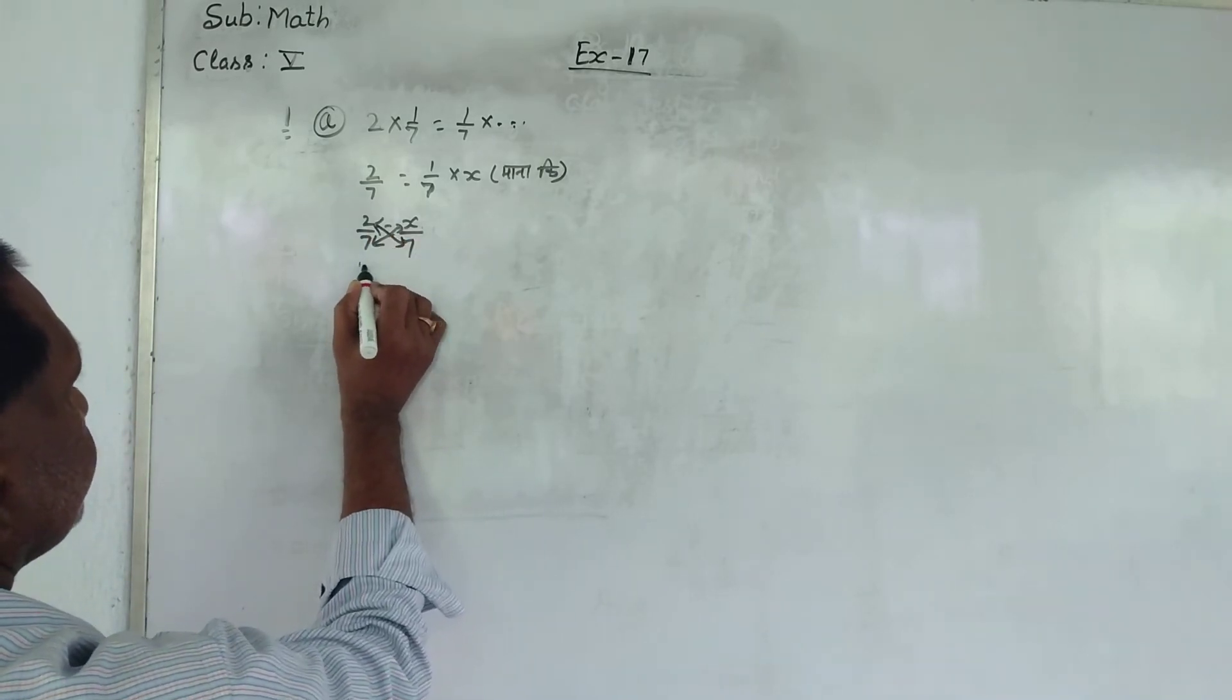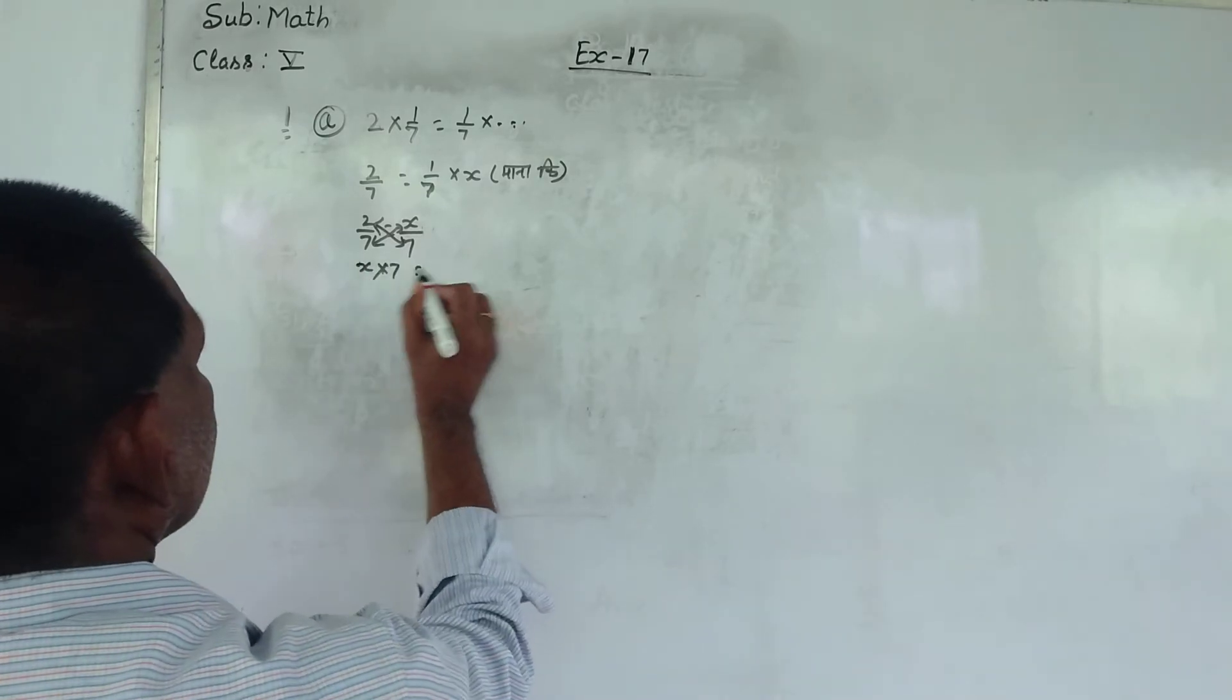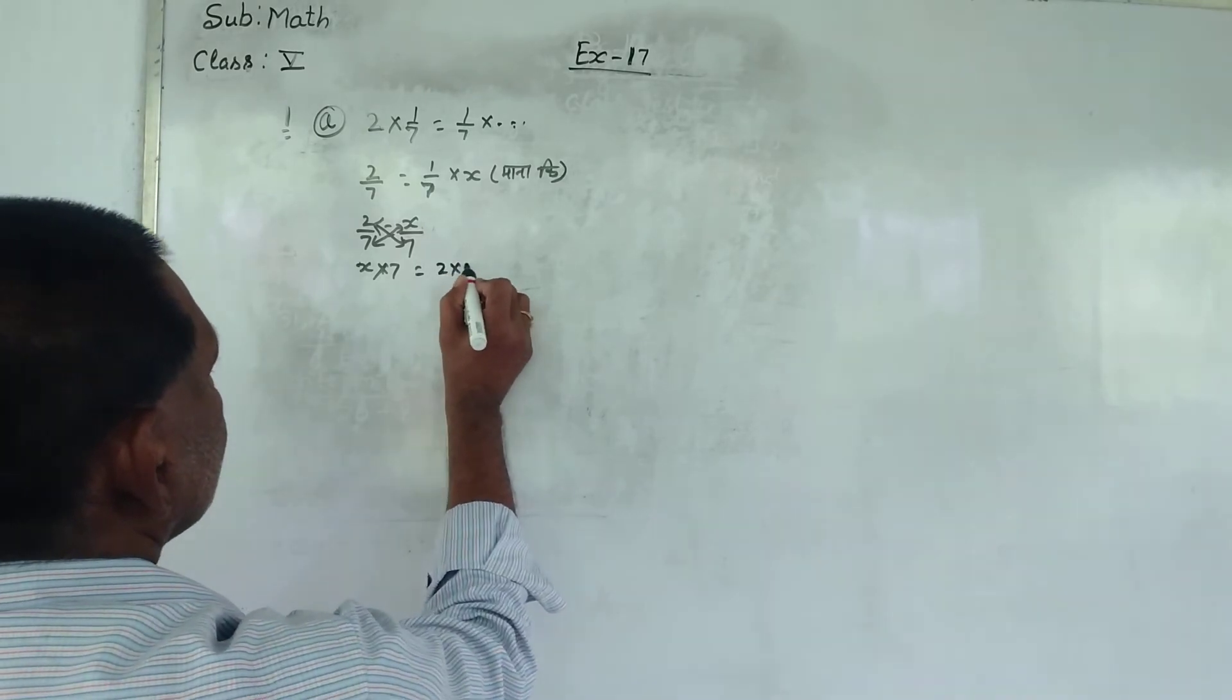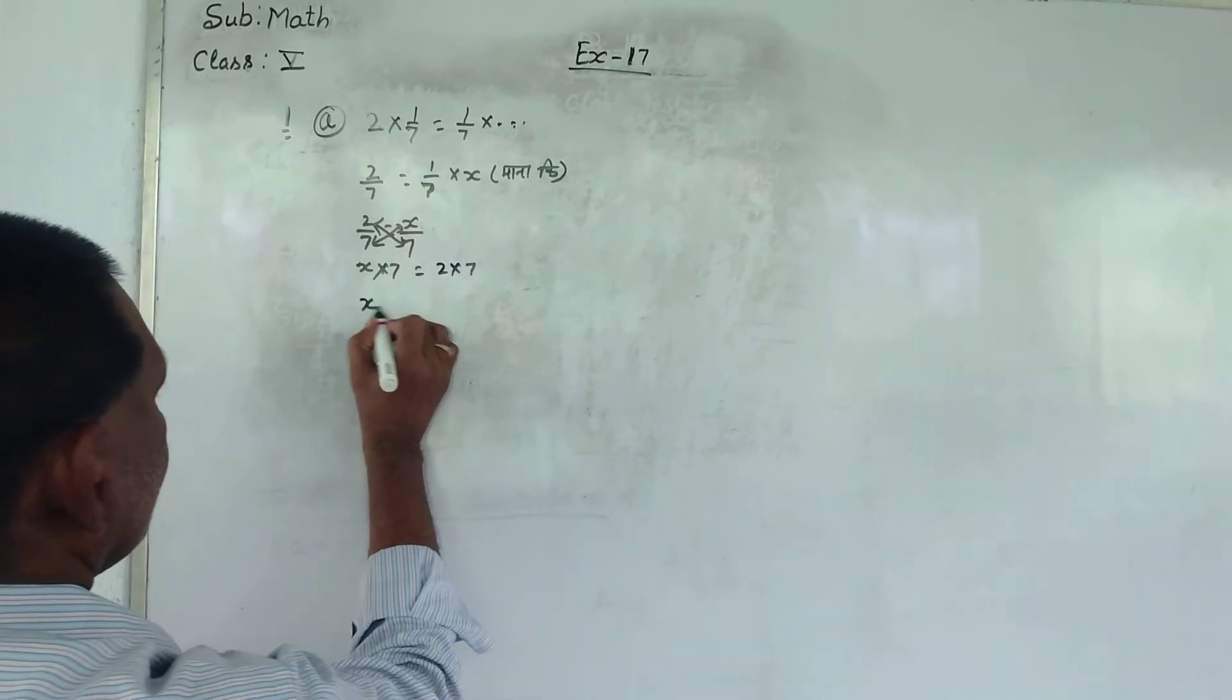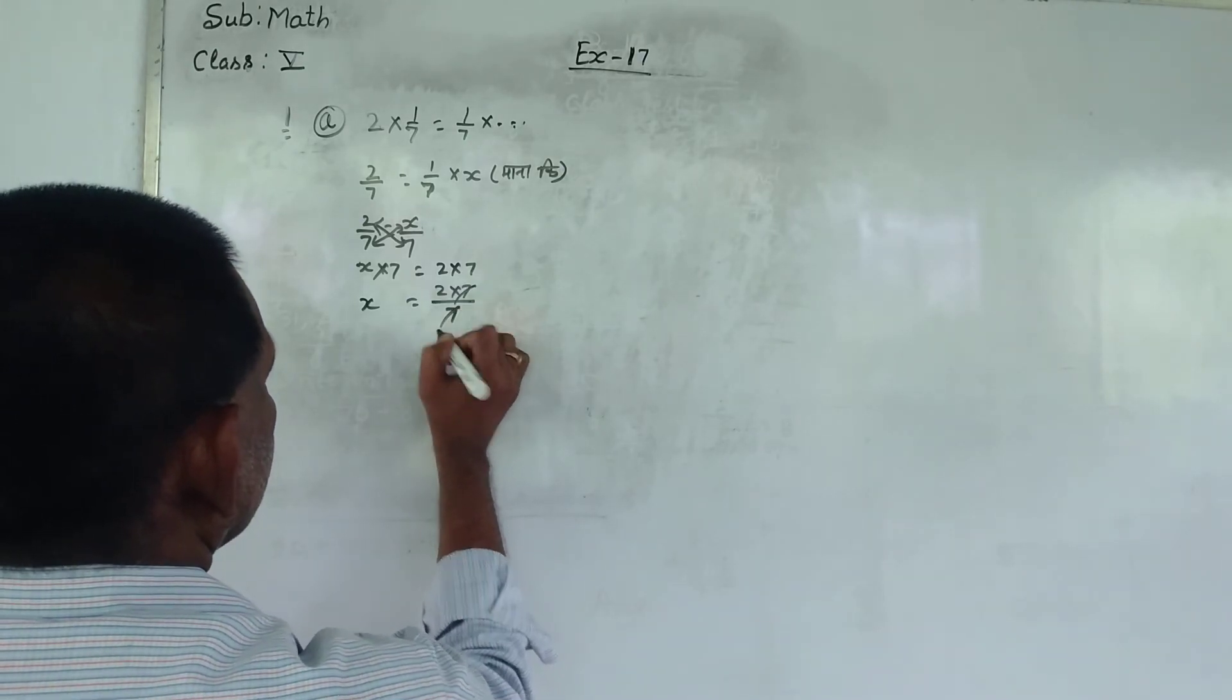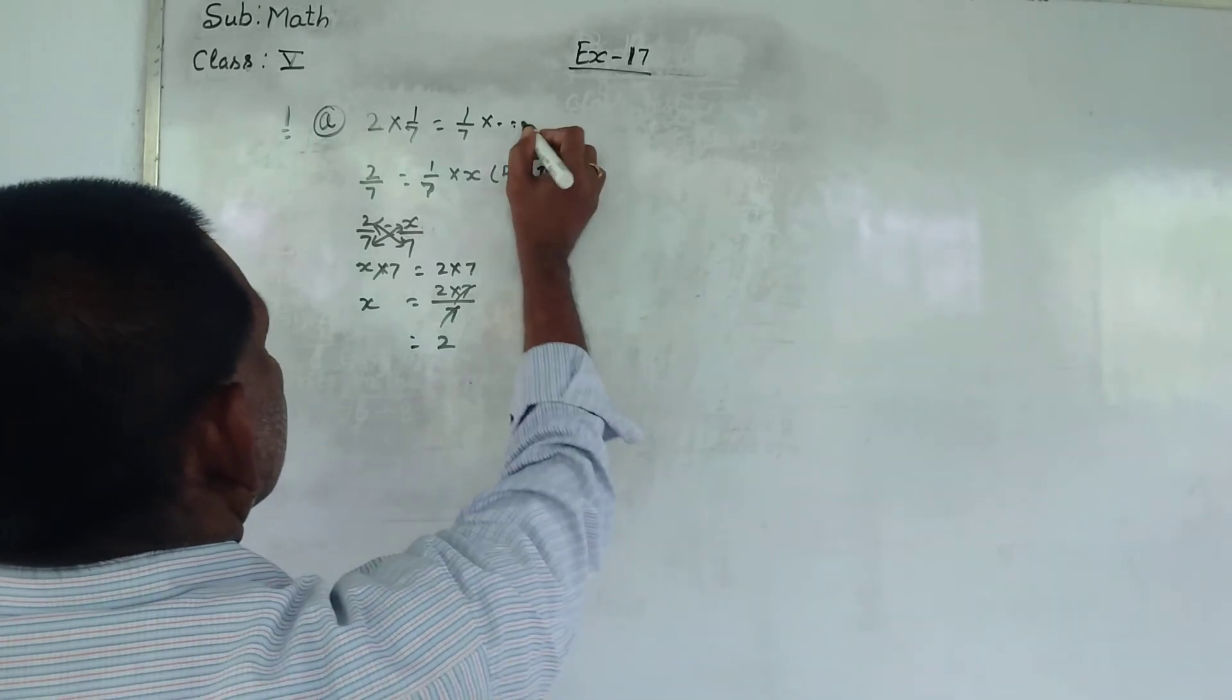Toh x into 7. And ye ho gya Hemaara 2 into 7. Toh x Vravar ke aap jayega 2 into 7 Bata 7. Yaya yaya cut. Yaya equal to 2. Toh Toh khaliya stand 2.